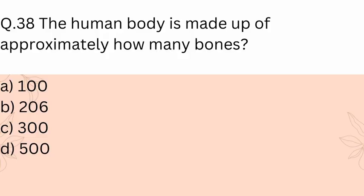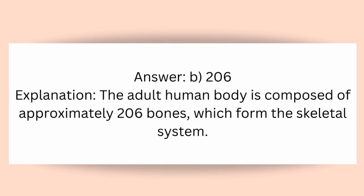Question 38: The human body is made up of approximately how many bones? A) 100, B) 206, C) 300, D) 500. Answer: B) 206. Explanation: The adult human body is composed of approximately 206 bones, which form the skeletal system.